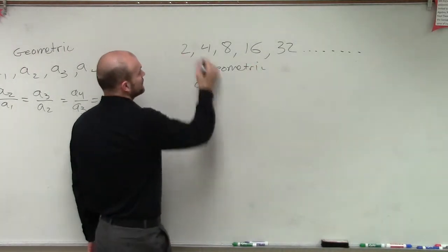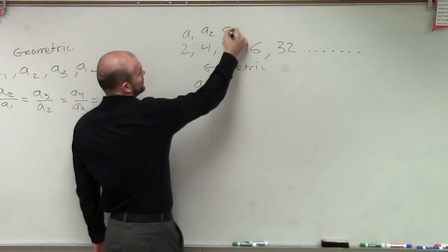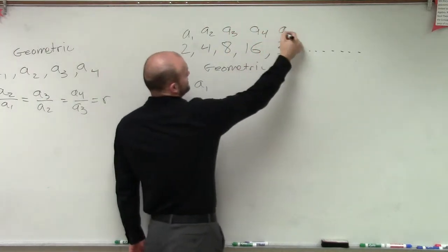And remember, geometric. If we have our first four terms, asa 1, asa 2, asa 3, asa 4, we could do asa 5.